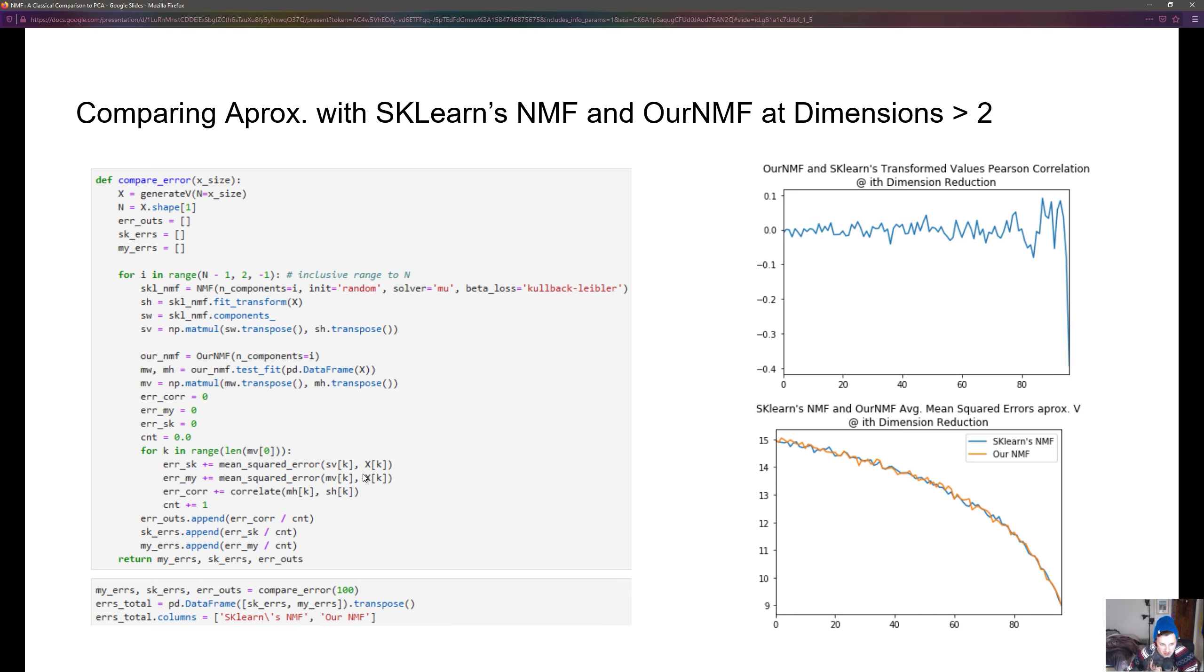I'm also correlating the transformed H values for both our scikit-learn implementation and our implementation of NMF. This will tell us how the transformed values correlate to each other at each iteration.